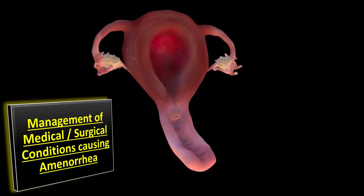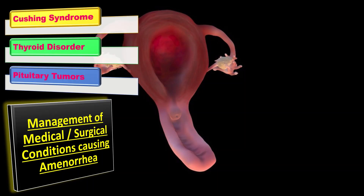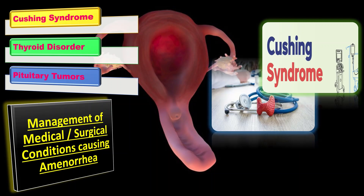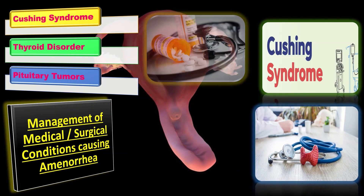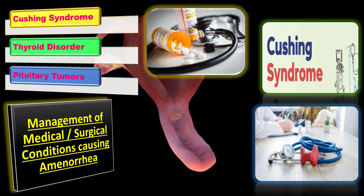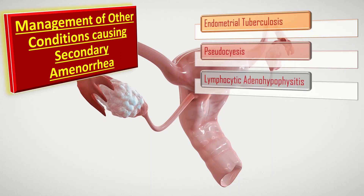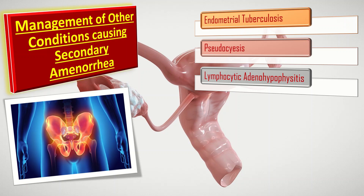Let us discuss the management of medical or surgical conditions. First, Cushing syndrome: the patient is best managed by referring to an endocrinologist. Such patients should be fully counseled and reassured that having amenorrhea does not bear any serious effect on general health and future fertility. Second, thyroid disorder: the patient is best referred to an endocrinologist who will recommend either medical or surgical treatment depending upon the type of thyroid dysfunction. Pituitary tumor is best managed by either bromocriptine or surgery. Pelvic tuberculosis is best treated with anti-tuberculosis medications, which are used for pulmonary tuberculosis but are also helpful in pelvic tuberculosis, although fertility outcomes are generally poor.